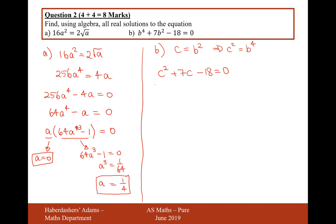The next thing to do is to factorize: C plus 9 times C minus 2 equals 0. Therefore either this bracket equals 0, in which case C equals minus 9, or C equals 2 from the second bracket.